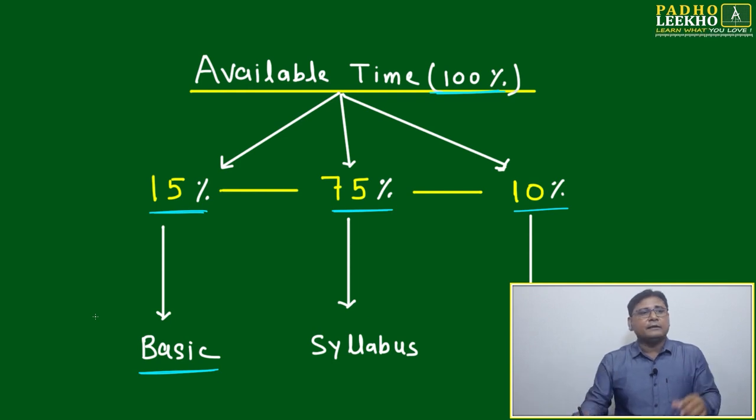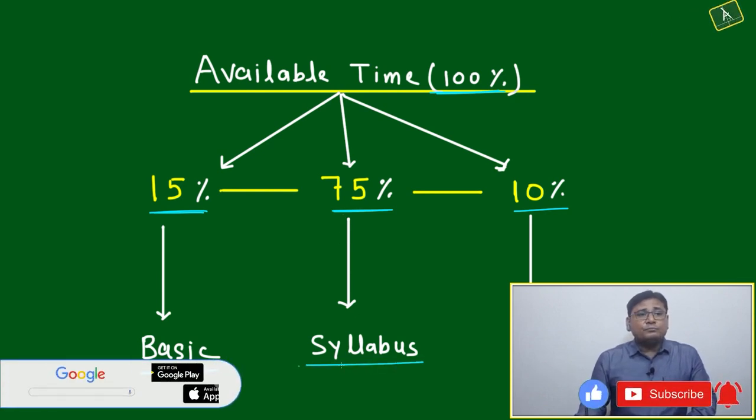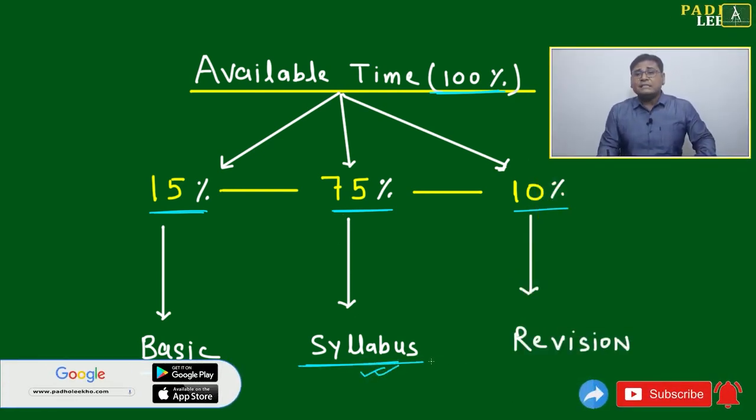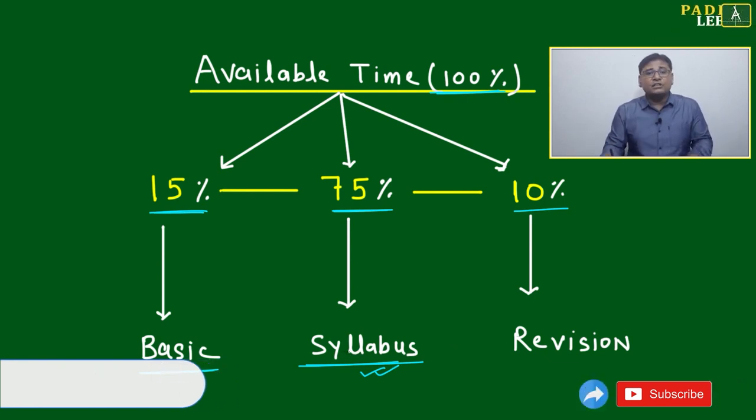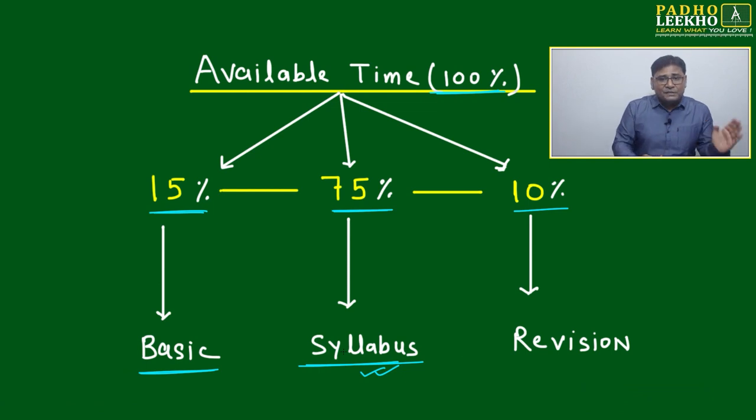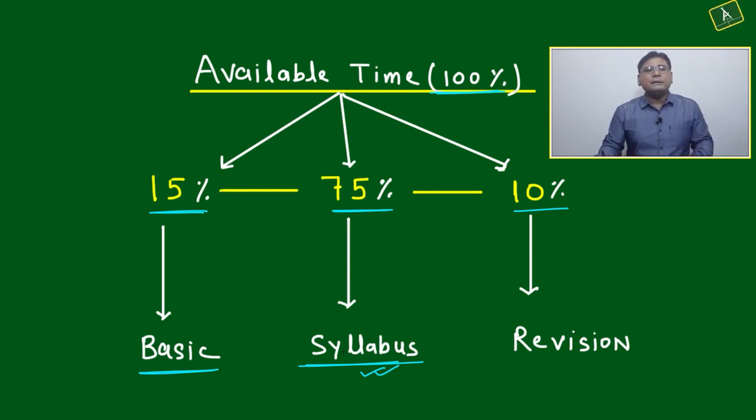75% of time you spend on your syllabus, or if you're starting any new project, 75% time you must give to action. 15% time: gather all information. 75%: action. 10% time: revision. This is the mantra, and if you're able to follow this 80-90%, that will be enough to get success.